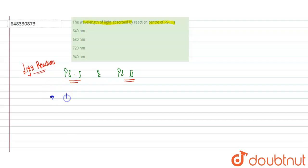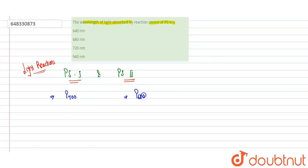In the case of Photosystem 1, the reaction center is P700, meaning it absorbs maximum light at 700 nanometers. While in the case of Photosystem 2, the reaction center is P680, so it absorbs light at a wavelength of 680 nanometers.